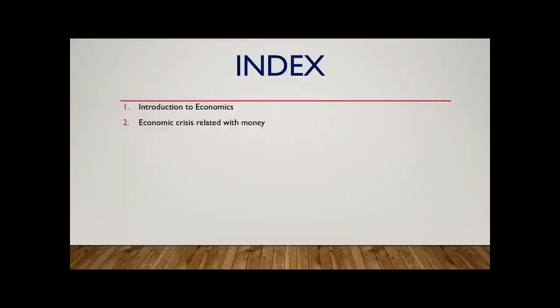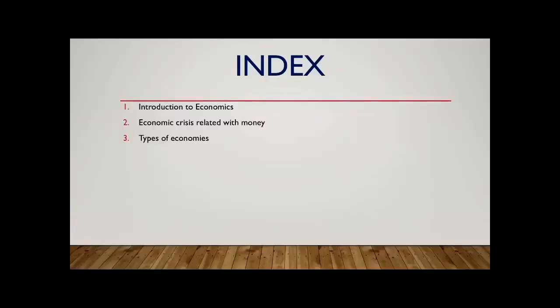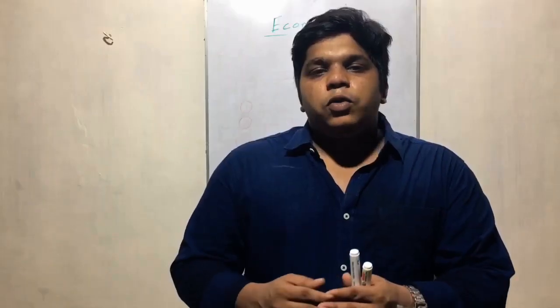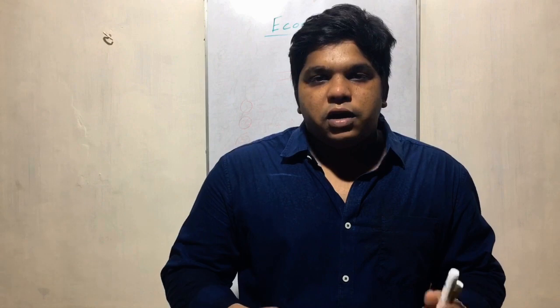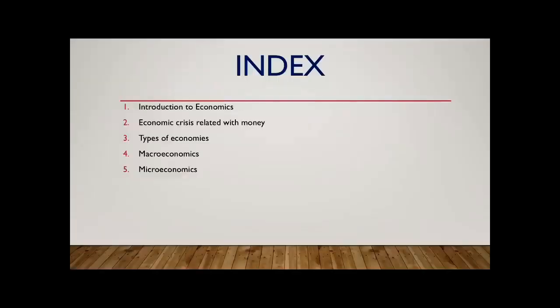Then we have the crisis chapter — world crisis or the Indian crisis — which deals with the meaning of money. For example, the 1928 Great Depression and the South Asian crisis gave us a broader look at what money means. The third chapter covers types of economies such as state economy, capitalistic economy, and mixed economy, and also macroeconomics and microeconomics.